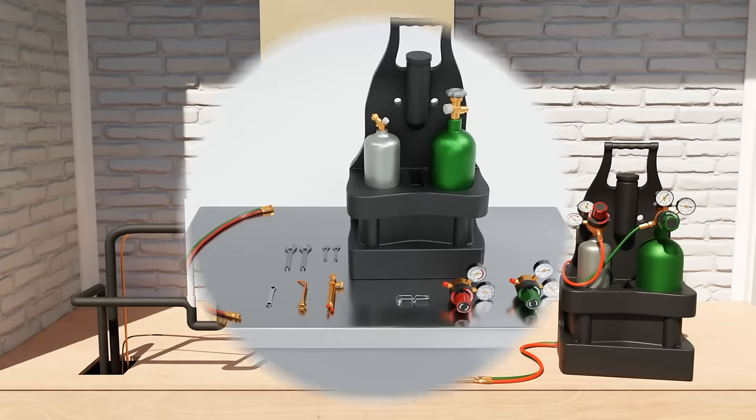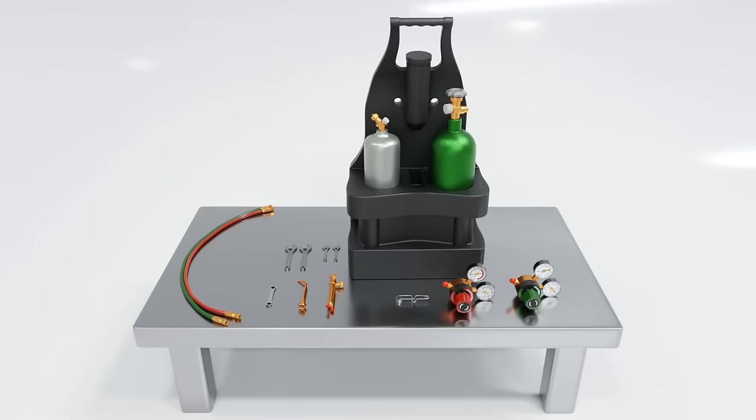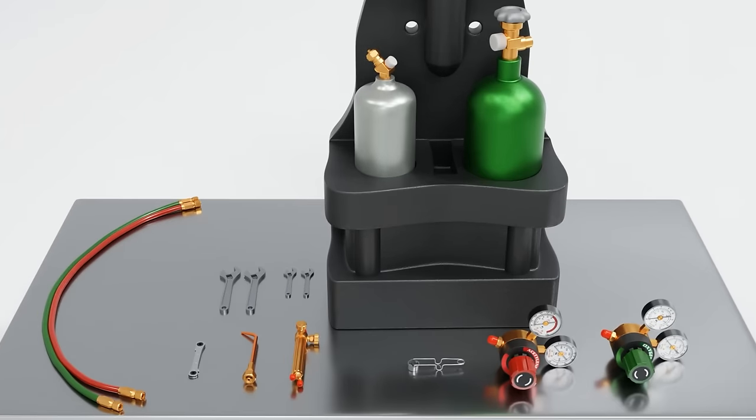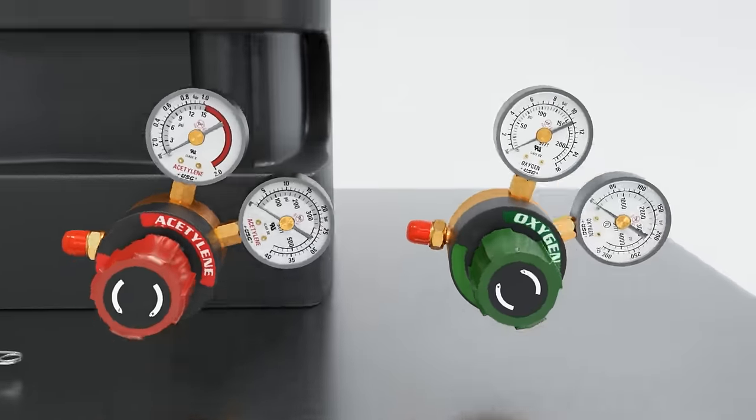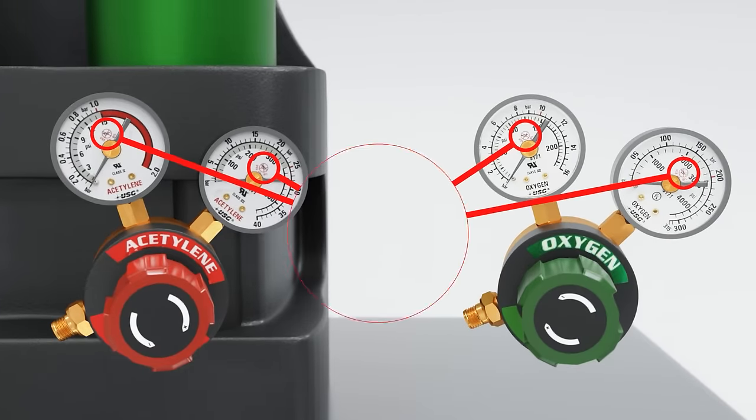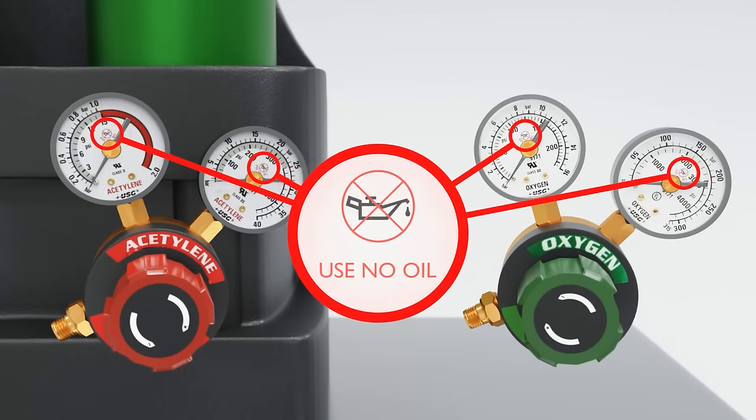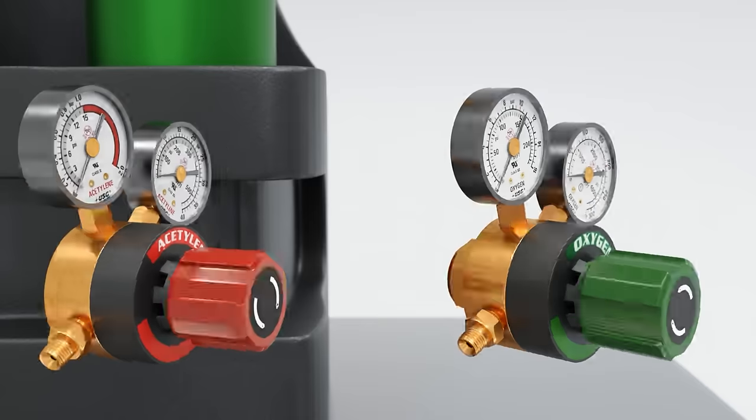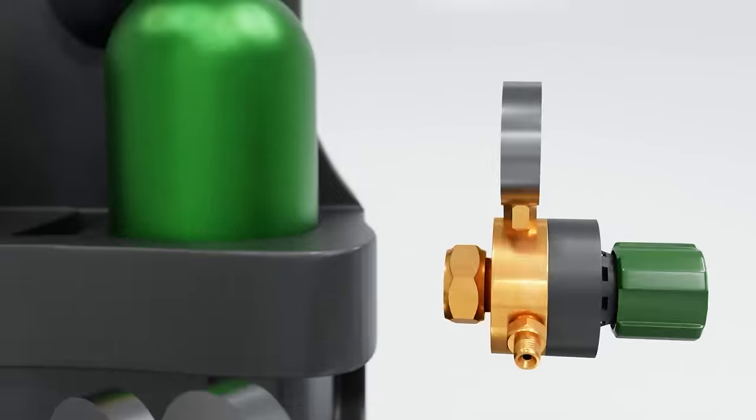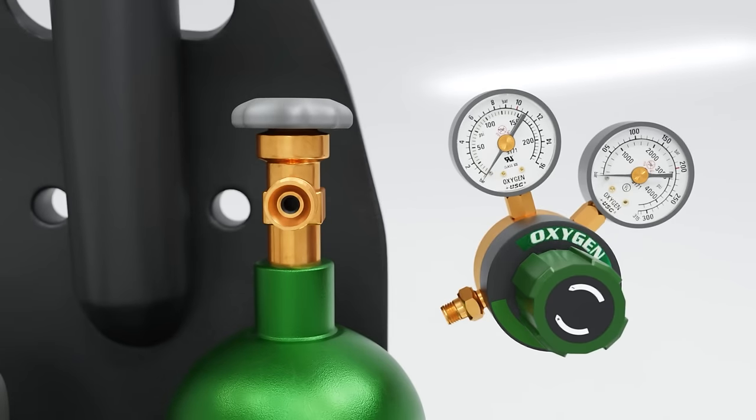Next, we're going to show the proper setup of an oxygen and acetylene torch rig. First, keep in mind that you're not supposed to use oil on the threaded connections of your regulators. This is especially true on the oxygen side, as oil or lubricant on the oxygen threads can result in combustion, unless it's specifically designed for that purpose.